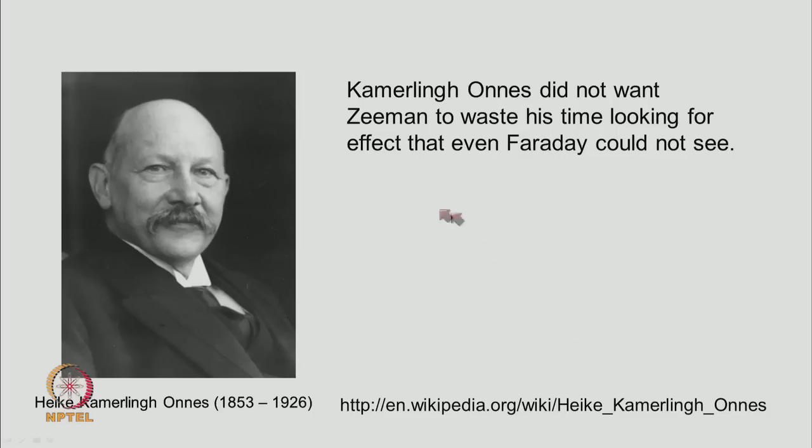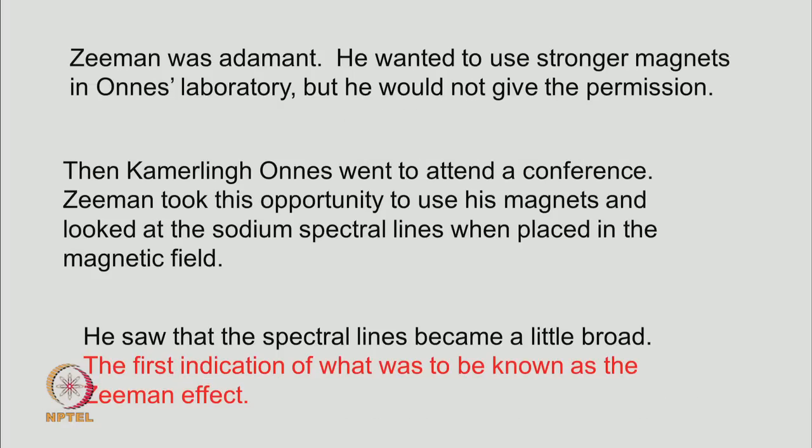But his professor, Kemerling Owens did not want Zeeman to waste his time, looking for effect that even Faraday could not see. So, he was discouraging him, but Zeeman was adamant. He wanted to use stronger magnets, magnets which were lying in Owens laboratory, but Owens would not give him permission. So, then Owens went to attend a conference.